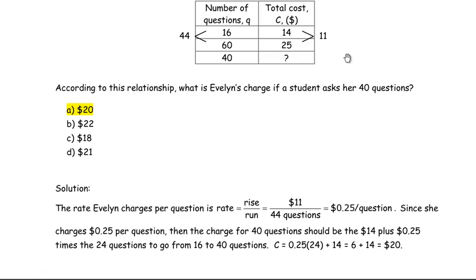The rate—remember, this is the rise and this is the run—the rise is $11 for 44 questions, which is the run. 11 divided by 44 is 0.25. If you keep the units, you'll understand better what the rate represents. This is dollars per question, so she's charging $0.25 per question.